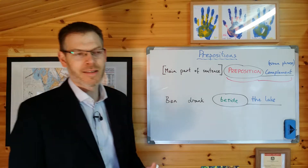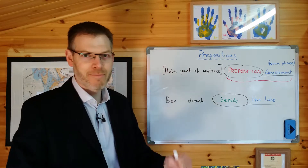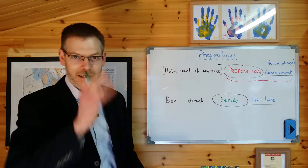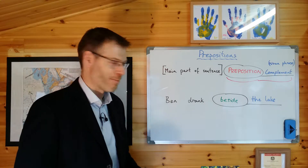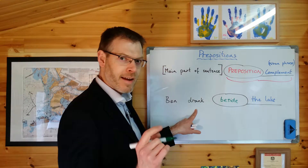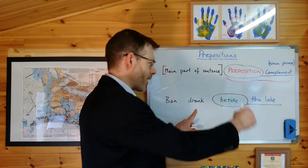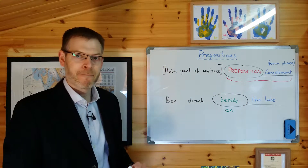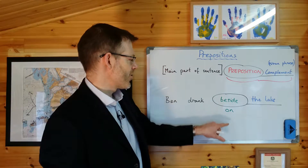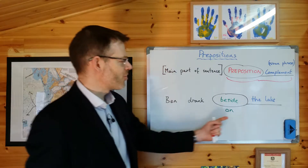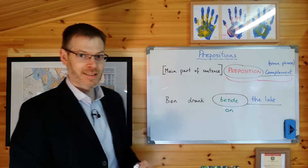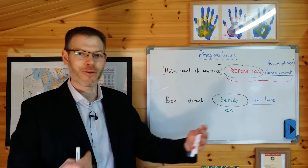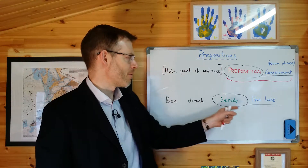But you could imagine a different preposition. You could imagine that Ben is in a boat or a canoe — he's paddled out, he's got a bit hot and thirsty, so he pauses and has a drink from his water bottle as he sits in the boat. Then you say 'Ben drank on the lake', and you need a preposition which expresses that relationship — perhaps 'on'. If you change the preposition, you're expressing a different kind of relationship between the complement and the rest of the sentence.